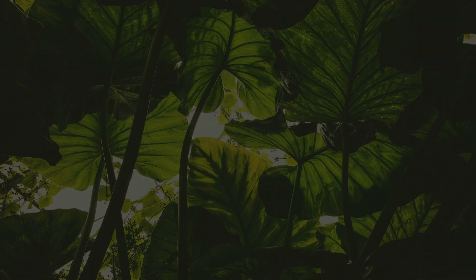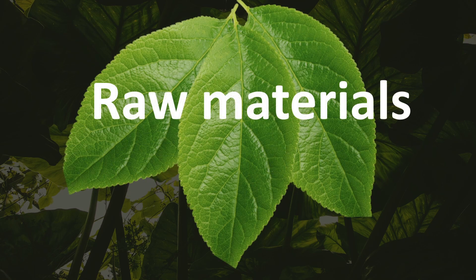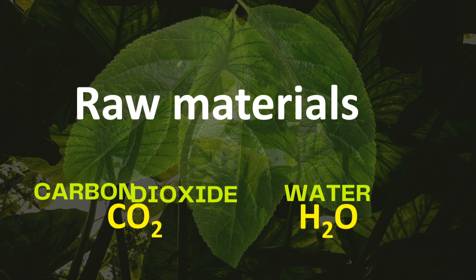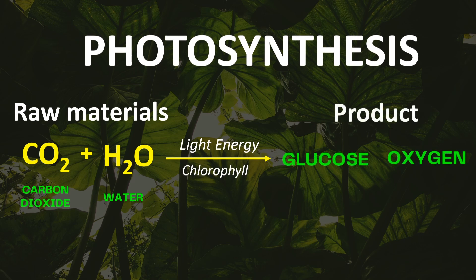Like a factory, the leaves need raw materials to manufacture products. Raw materials for this process are carbon dioxide and water. These raw materials need energy to make food. The sunlight captured by the chlorophyll provides energy to combine carbon dioxide and water. When the chlorophyll converts the raw materials, they become glucose or sugar and oxygen.